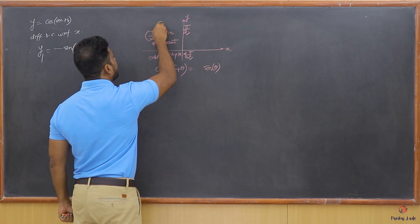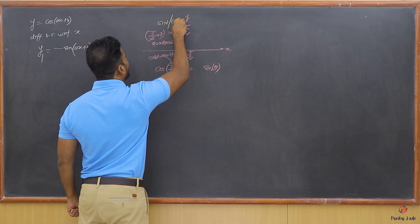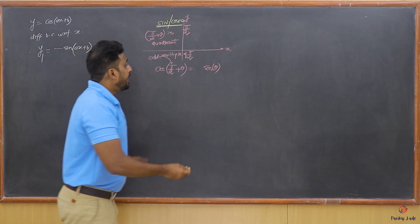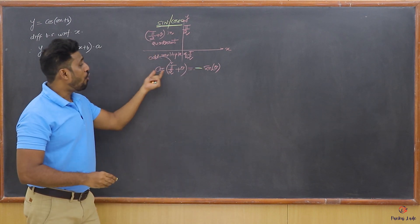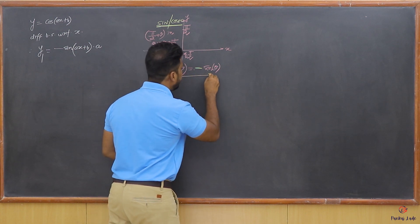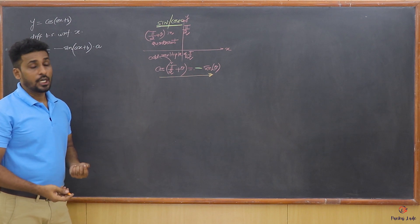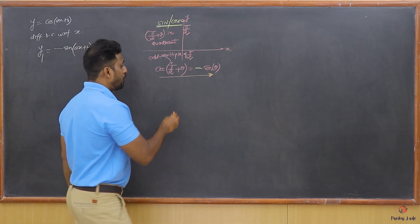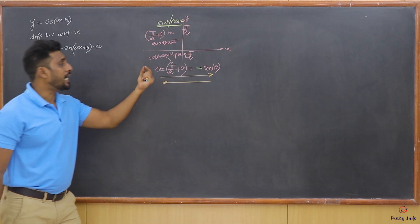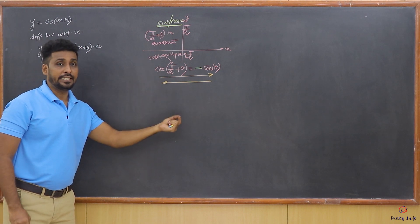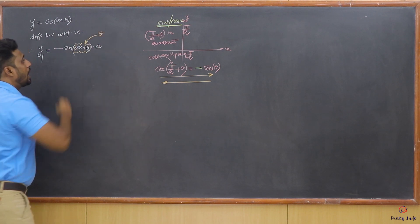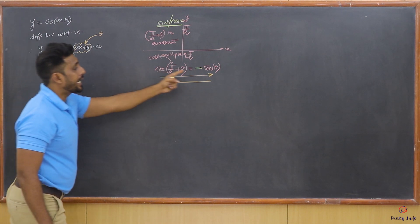Since (π/2 + θ) is in the second quadrant, and in the second quadrant sine is positive while cosine is negative, when finding cos in the second quadrant it becomes negative. So cos(π/2 + θ) = -sin(θ). Reading the formula from left to right: cos(π/2 + θ) = -sin(θ). It can also be read from right to left: -sin(θ) = cos(π/2 + θ).